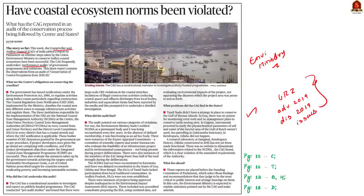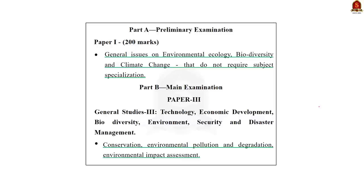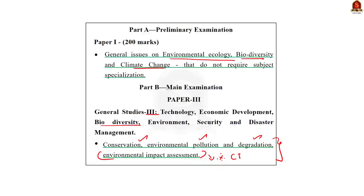Before getting into the discussion, let me give you the syllabus of mains and prelims relevant to this topic. In the preliminary examination, this topic comes under general issues of environmental ecology, biodiversity and climate change. In the mains examination, it comes under General Studies Paper 3, specifically under Biodiversity and Environment — conservation, environmental pollution and degradation, and environmental impact assessment. This is where coastal regulation zone comes.